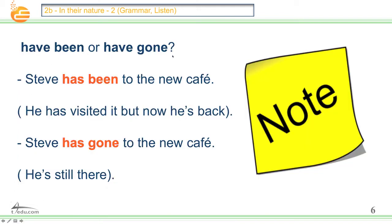Have been or have gone — what's the difference? 'Steve has been to the new cafe' — he has visited it, but now he's back. He has been there but now he is back. What about 'Steve has gone to the new cafe'? He's still there. Steve has gone — he's still there everybody. Very important: do not confuse have been and have gone. If he's still there, use have gone. If he has visited it but now he's back, use have been.